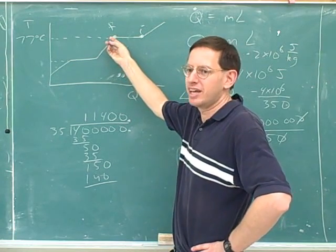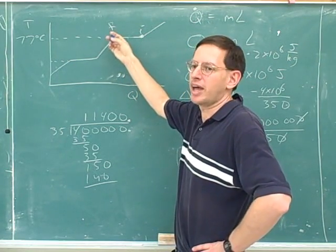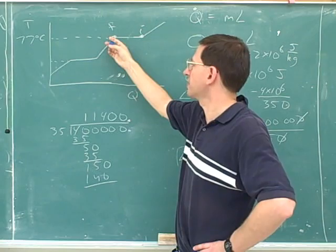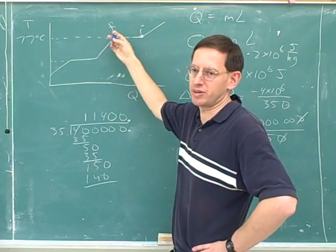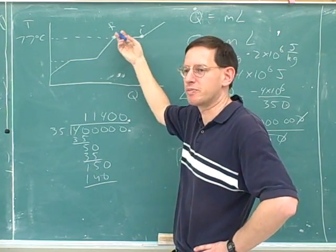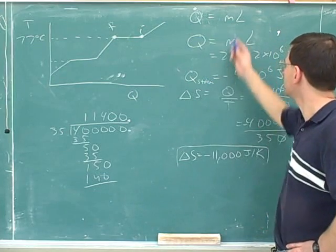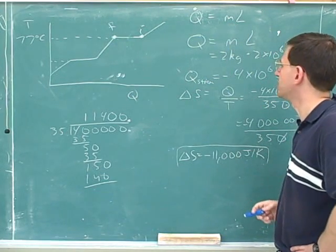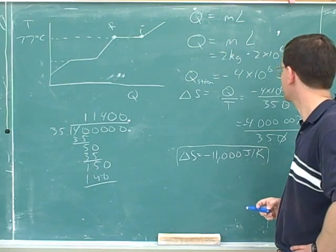We can imagine instead of using snow, imagine using water that's almost at 77 degrees Celsius and having it take the heat out. Well, that would be a process that would be very close to going in the opposite direction because then you'd have two things that are almost in equilibrium with each other. So it's still legal to use this formula here because we could imagine a reversible process that was condensing the steam.